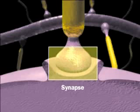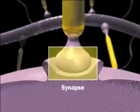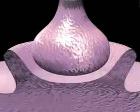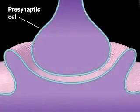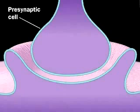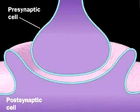At a chemical synapse, a neurotransmitter molecule, such as acetylcholine, communicates a signal from one neuron, the presynaptic cell, to another, the postsynaptic cell.